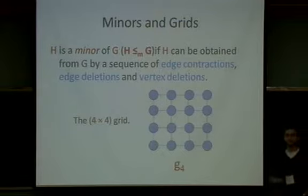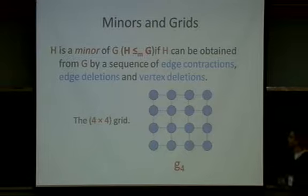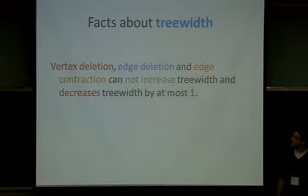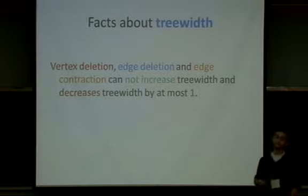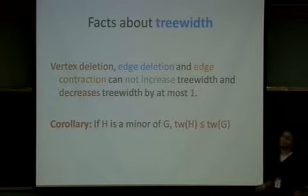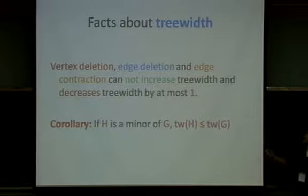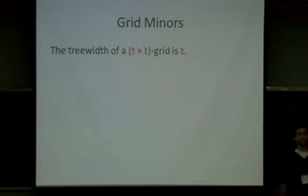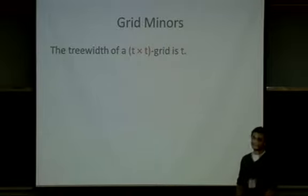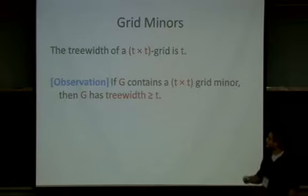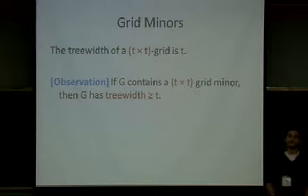Given that we're talking about grid minor theorems, this is a 4×4 grid, a 5×5 grid, and so on, defined analogously. A few facts about tree widths: if you delete vertices, delete edges, and contract edges, then you can never increase tree width. A corollary is that if H is a minor of G, then the tree width of H is at most the tree width of G. One can show — and this is surprisingly difficult — that the tree width of a T×T grid is exactly T. From this it follows that if G contains a T×T grid minor, then the tree width of G is at least T.